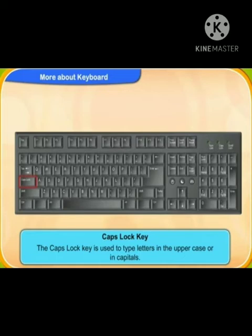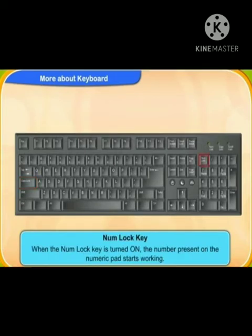Special keys are used to perform special and unique functions. The Caps Lock key is used to type letters in uppercase or capital. When Caps Lock is on, letters are typed in capitals. When the Num Lock key is turned on, the numbers on the numeric pad start working.